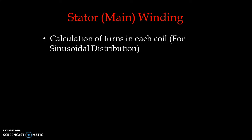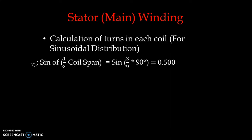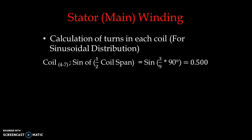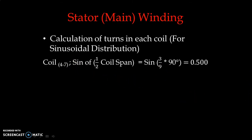We can see that each coil has a different span. Now, calculation of turns in each coil: we do this arrangement for a sinusoidal distribution of the magnetomotive force wave to get very close to a sine wave. For coil 47, the innermost coil, we take the equation as sine of half of the coil span. For coil 47, sine of (3/9 × 90°), which comes to 0.5.